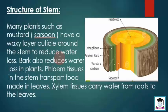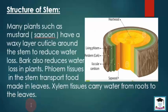Phloem tissues in the stem transport food made in the leaves. Phloem tissues paton ke andar maujood khoraak jo tayyar hoti hai, usko transport karte hain. Xylem tissues carry water from the roots to the leaves. Xylem tissues ka kaam hai ke paani ko juron se patte ke har hisse tak pohonchaya ja sake.